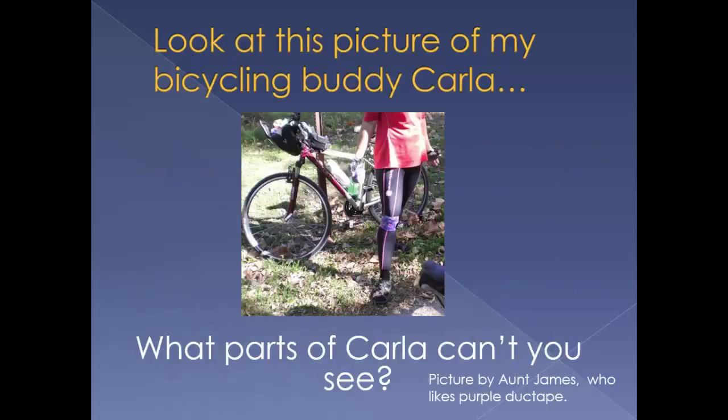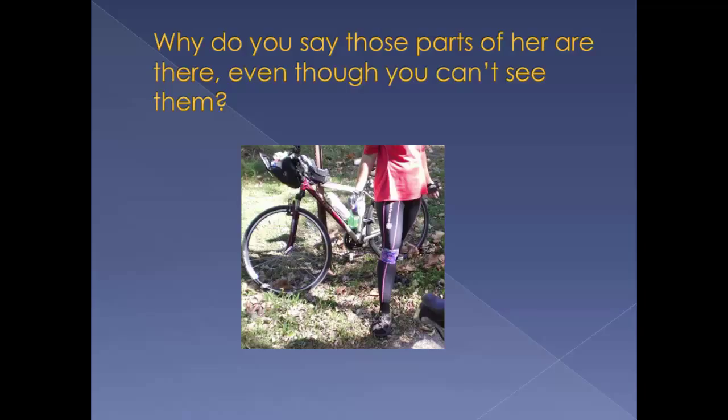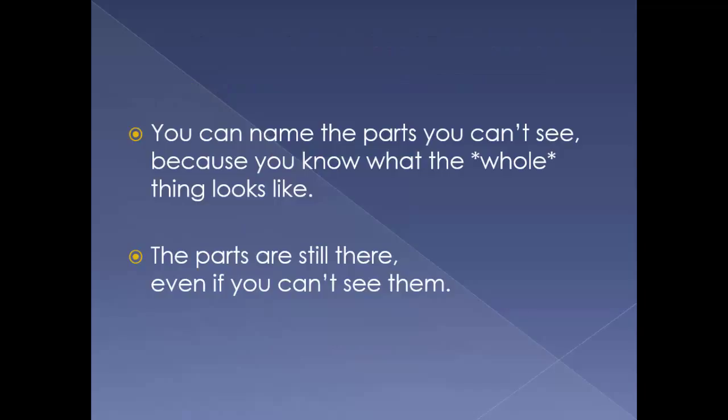Look at this picture of my bicycling buddy Carla. What parts of Carla can't you see? Why do you say those parts of her are there even though you can't see them? You can name the parts you can't see because you know what the whole thing looks like. The parts are still there even if you can't see them.